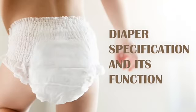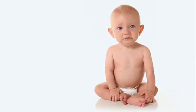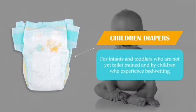Our next topic is diaper specification and its function. The first specification is children diapers. They are for infants and toddlers who are not yet toilet trained and for children who experience bed wetting.